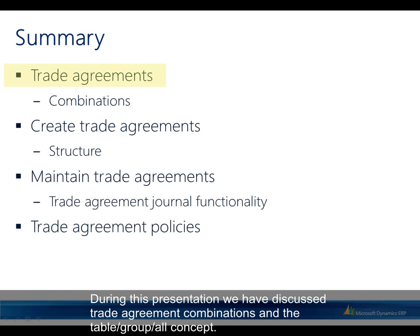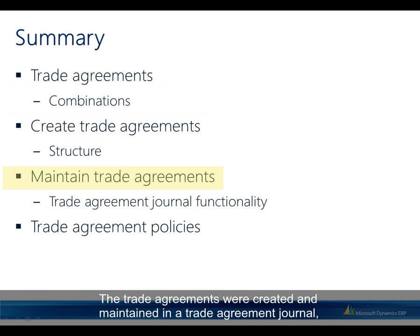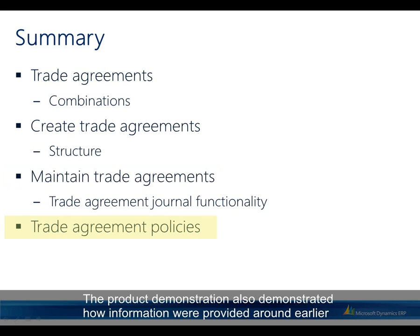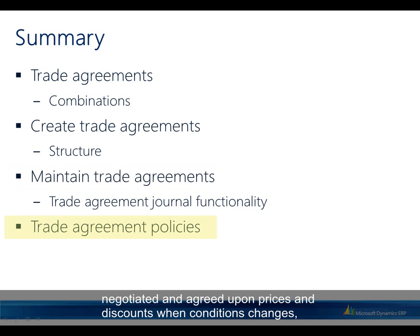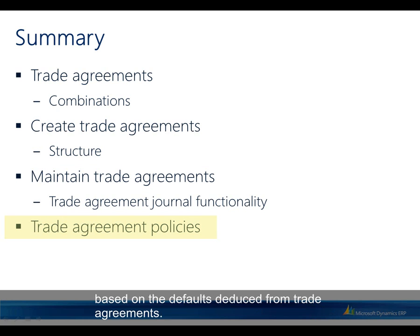During this presentation, trade agreement combinations and the table-group-all concept were discussed. The demonstration explained the structure of a trade agreement while creating trade agreements representing purchase prices, maintained in a trade agreement journal with various functionalities covered. The product demonstration also showed how information around earlier negotiated prices and discounts is provided when conditions change, so the user can evaluate whether to keep existing prices and discounts or re-evaluate based on the defaults deduced from trade agreements.